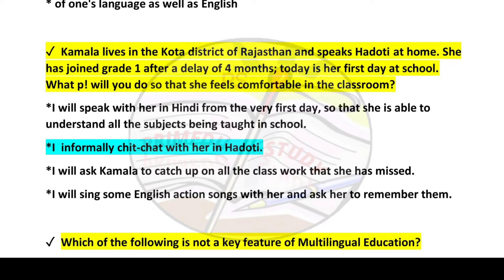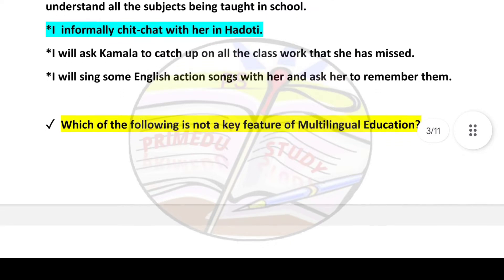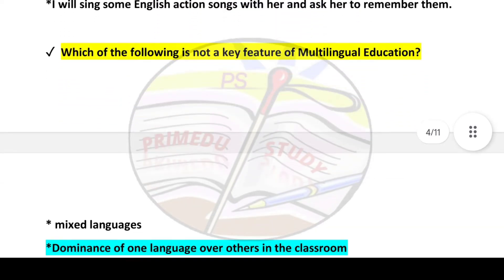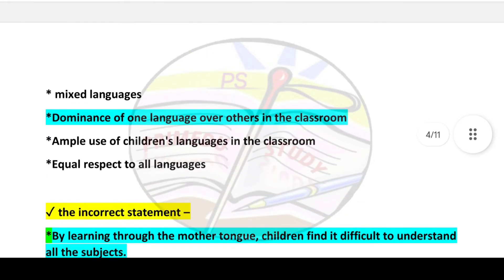What will you do so that she feels comfortable in the classroom? Answer is option number two: informally, she should be chatted with in Hadothi. Next question: Which of the following is not a key feature of multilingual education? Answer is option number two: dominance of one language over others in the classroom.